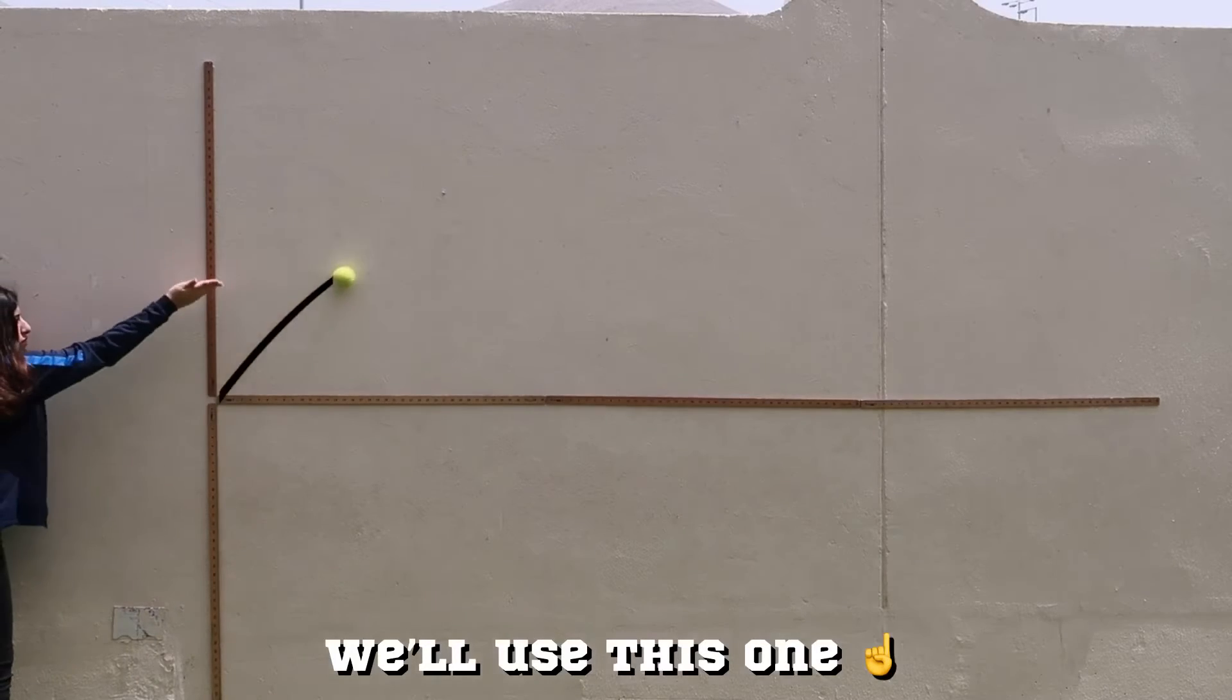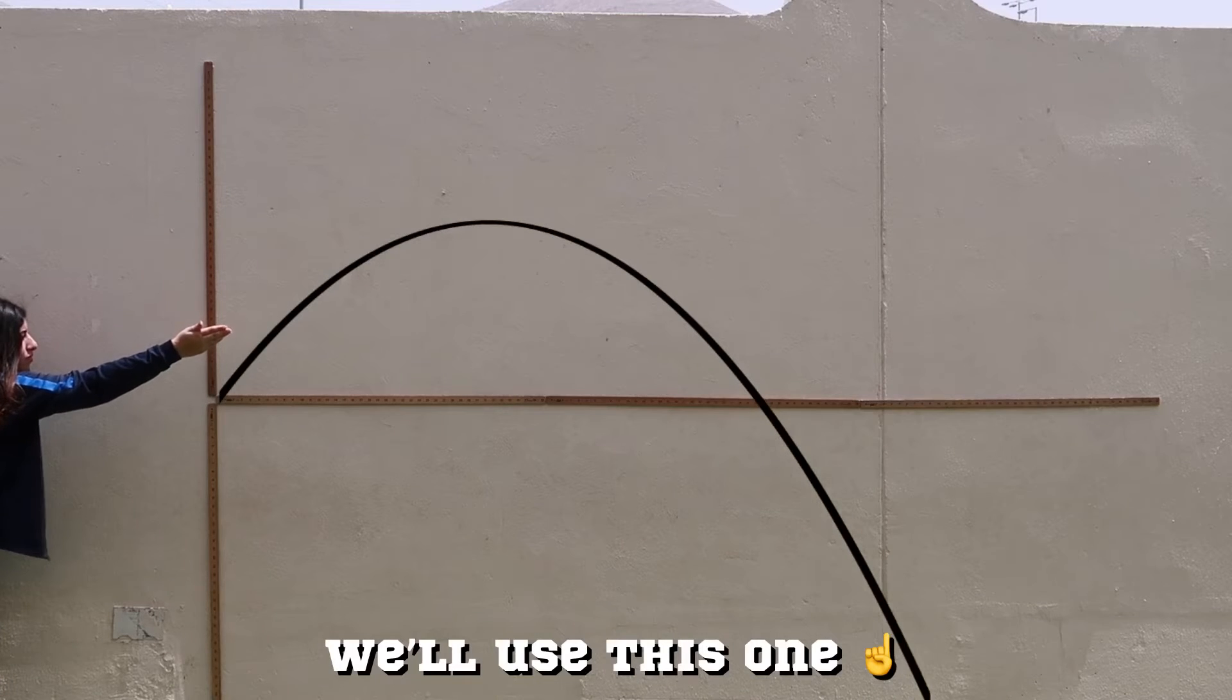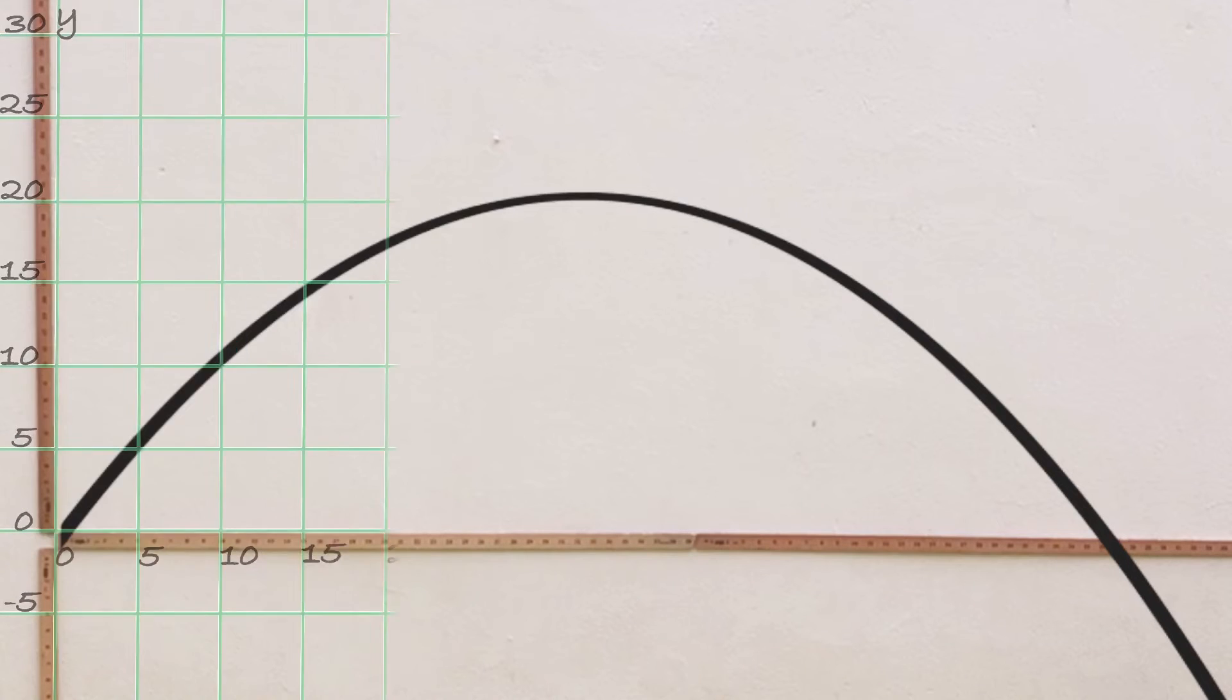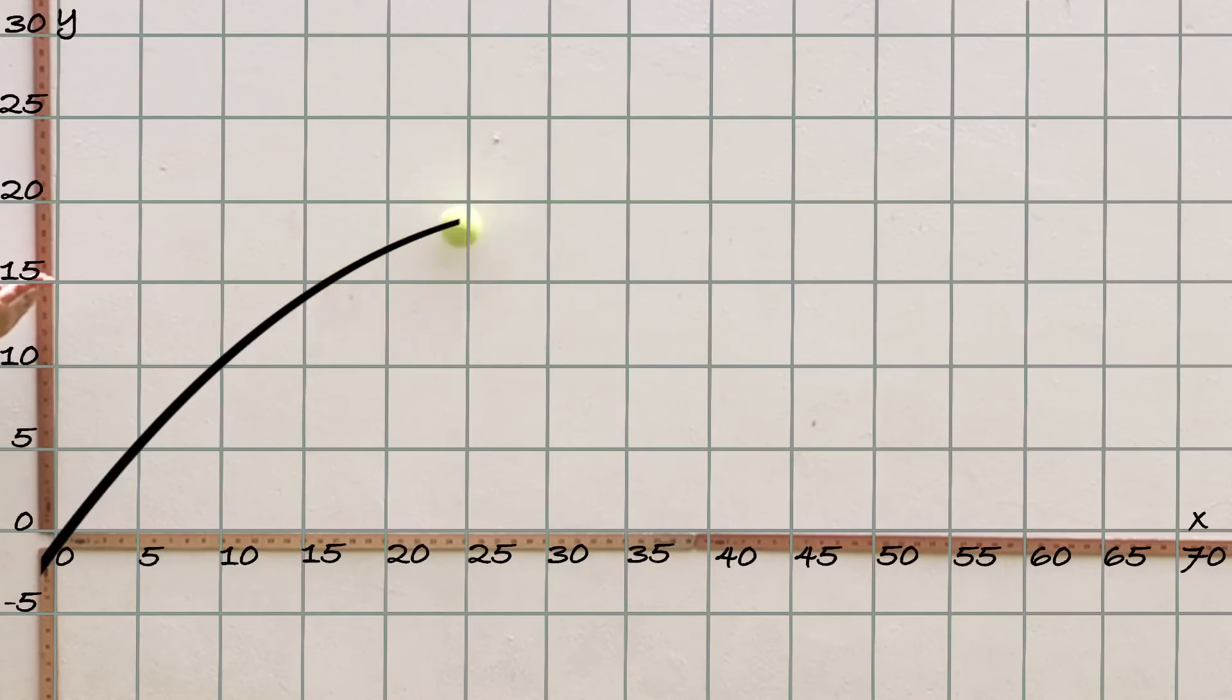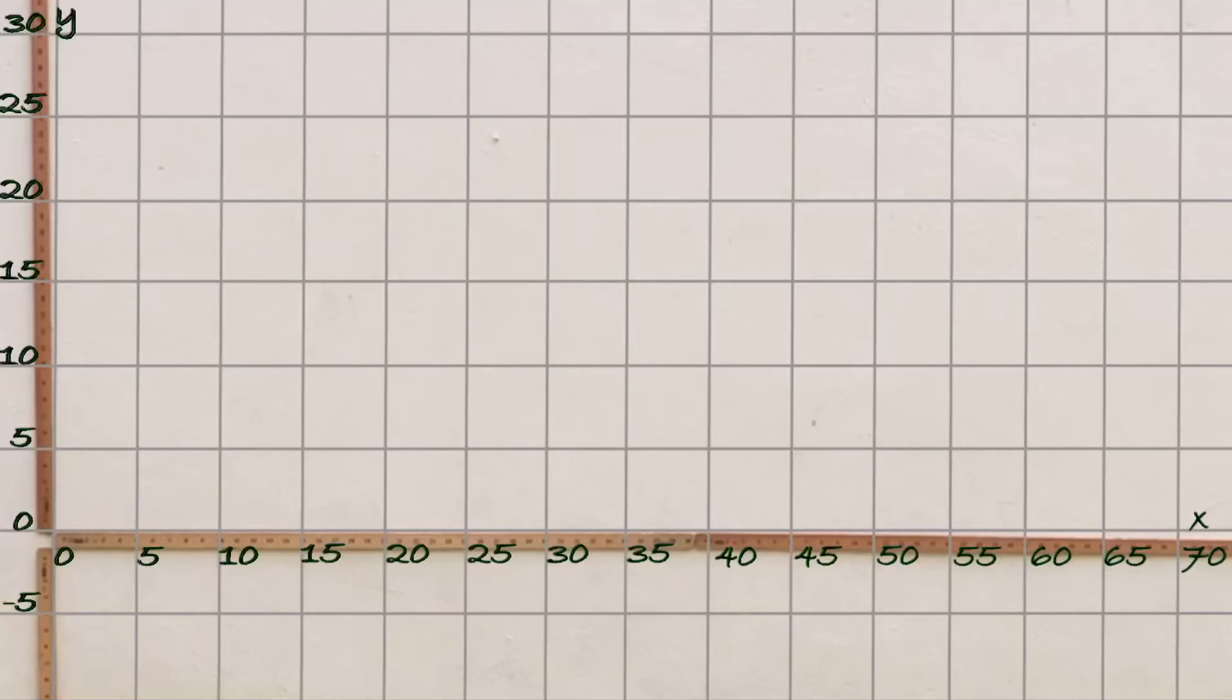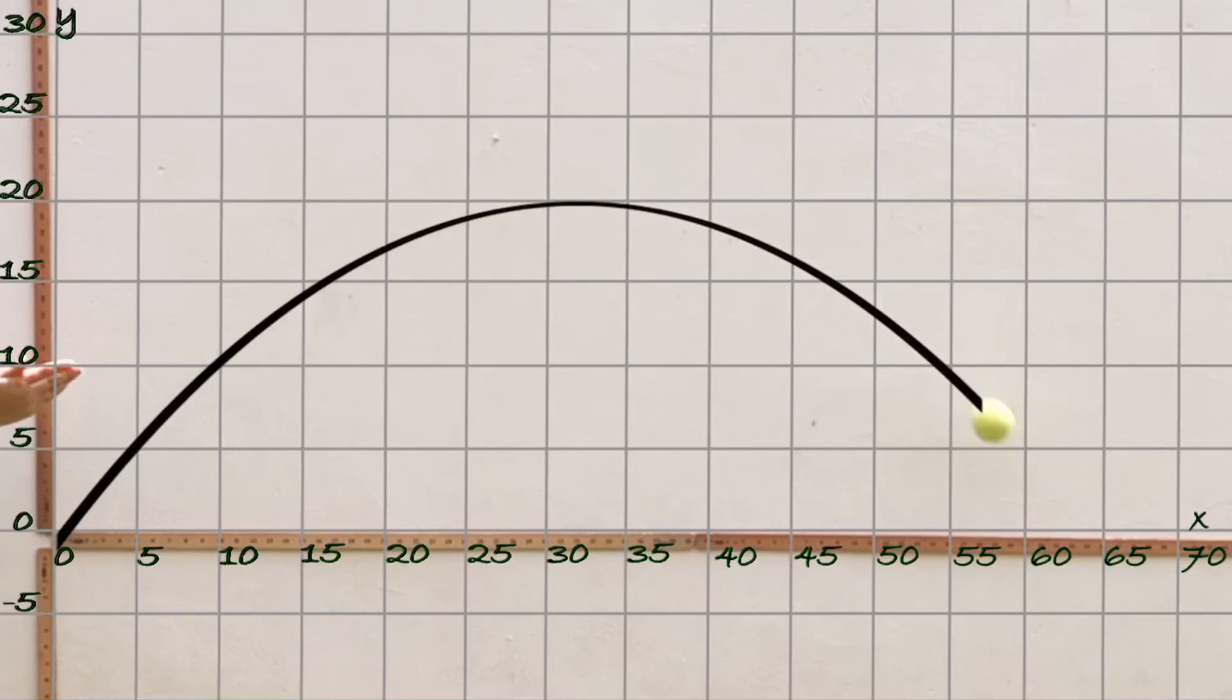So we can do the quadratic regression here. Let's zoom in and overlay a grid on top of this with x and y axes. We're going to use this parabolic curve to find the quadratic regression. Now that we've seen many examples of parabolic curves, we'll find the quadratic function. We'll go back to the video and take a look at the motion of this tennis ball as it's thrown through the air.